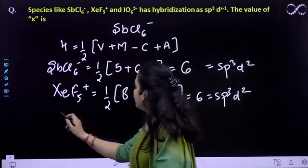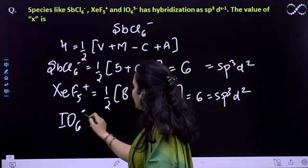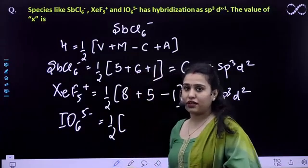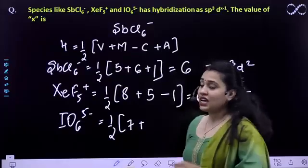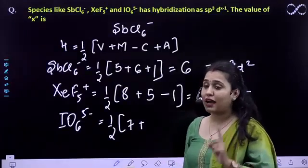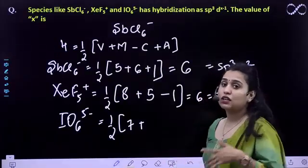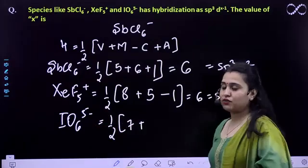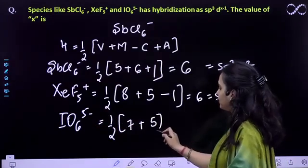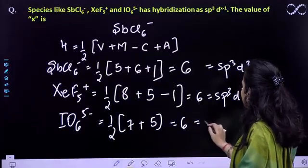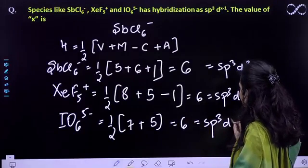Then we have IO6⁵⁻, that means half of - iodine has how many electrons in the outermost shell? 7, plus 6 oxygens - no, because oxygen is a bivalent atom, it has 2 negative charge. Now it has 5 negative charge, so we will be adding the 5 negative charge because it is not cationic, it is anionic charge. It is again 6, so the hybridization is sp³d².